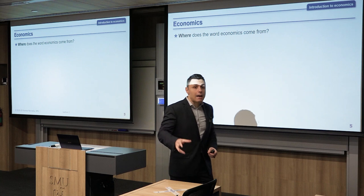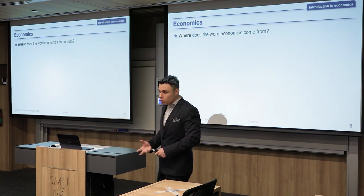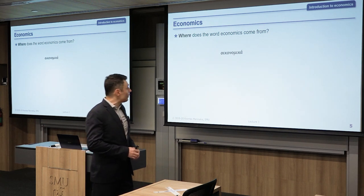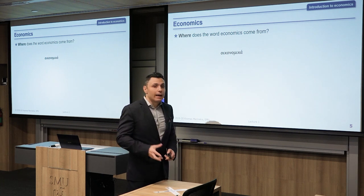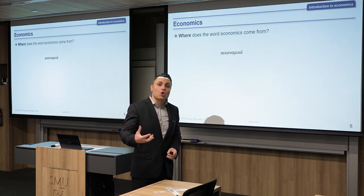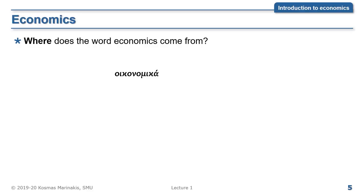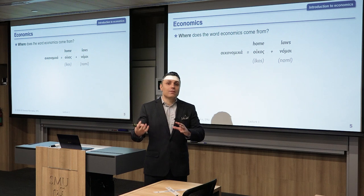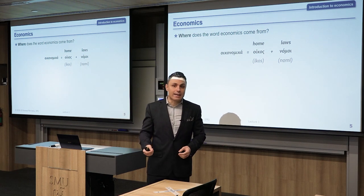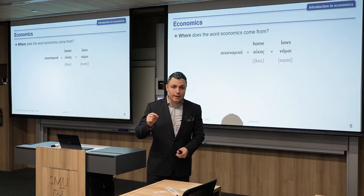As every time, we start from a definition. Where does the word economics come from? Economics comes from the Greek word 'economica.' In modern Greek, we call it 'economiki epistemi' — the science of economics. 'Economica' is a word that comes from two other words: 'oikos,' meaning house or household, and 'nomos,' meaning laws. So it's the science that examines the laws of the households — in other words, how households make decisions.